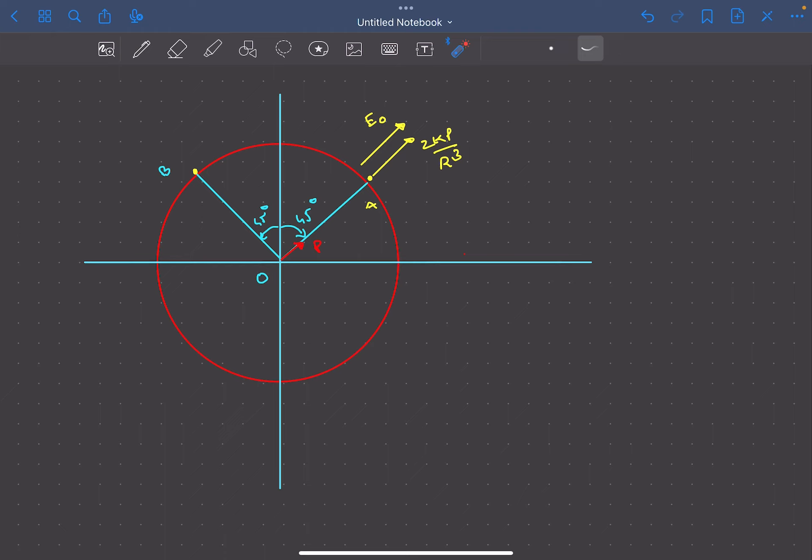The reason is that if E₀ was along some other direction, it would have a component in the tangential direction of the circle, which is clearly not possible since the circle is equipotential. As the circle is equipotential, at each point the net electric field must be perpendicular to the surface, which means E₀ must be aligned in the direction OA.